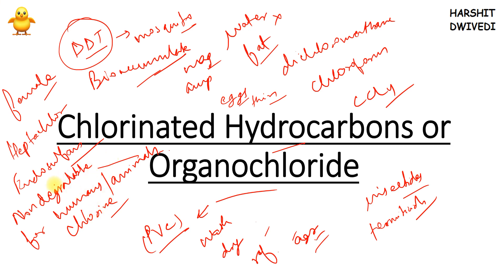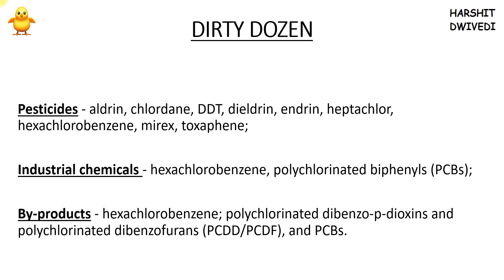Endosulfan is a big endocrine disruptor. Endocrine disruptors are chemicals that can interfere with your endocrine system — your hormonal system. When they interfere with your hormonal system, they can cause a whole lot of disorders: birth defects, developmental disorders, shortened limbs, and even cancers and tumors. This is the level of dangerousness of these elements, and this is the reason that the Stockholm Convention was brought in.